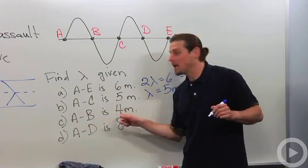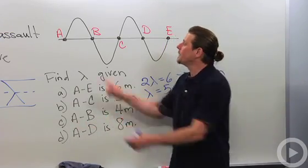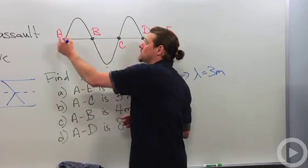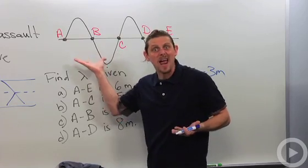What about this next one? A to B is four meters. Well A to B right here looks like half a wavelength because the piece here and the piece here are the same, just inverted.